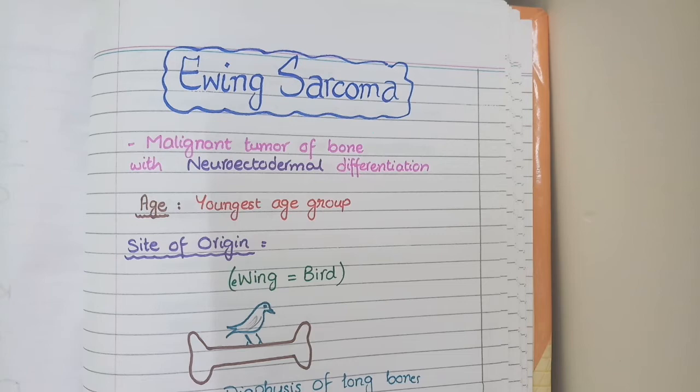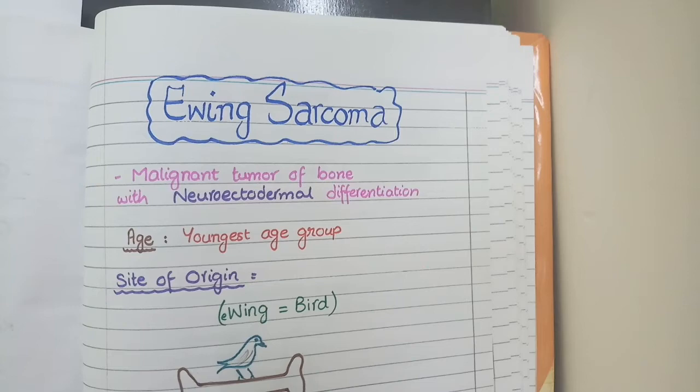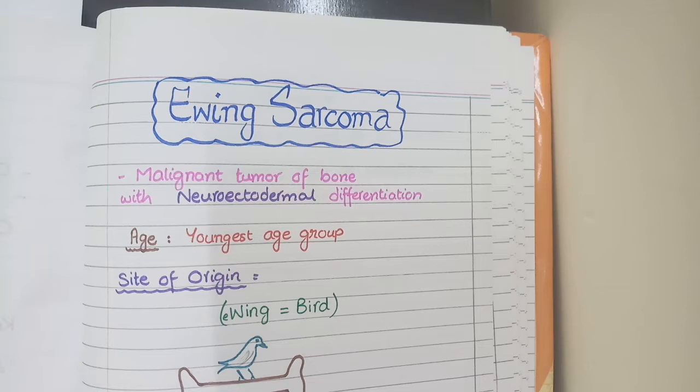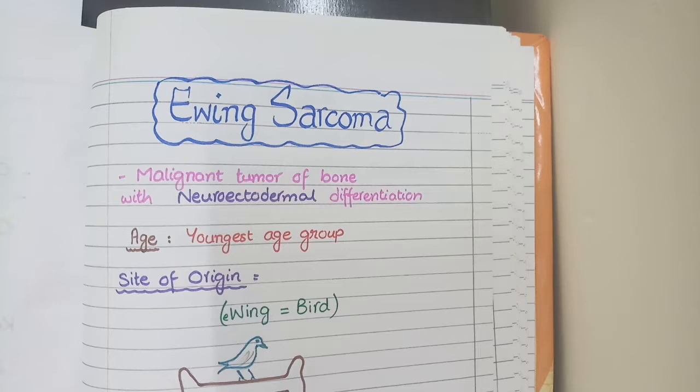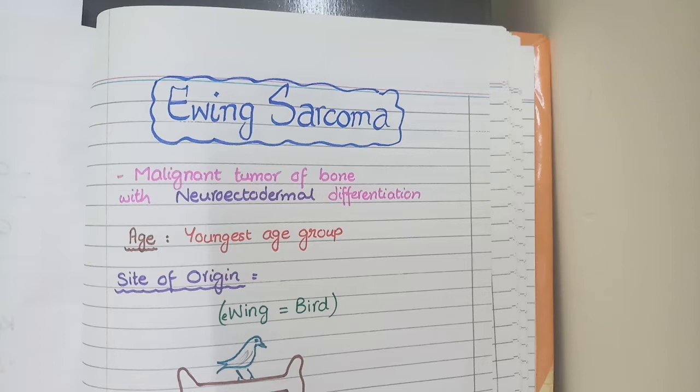In this video we will study the pathology of Ewing sarcomas. Ewing sarcomas and giant cell tumors are both considered tumors of unknown origin, meaning these tumors are present in bone but the precursor cells that undergo mutation to form them are not known. In this video we will focus on Ewing sarcomas, which are defined as malignant tumors of bone with neuroectodermal differentiation.